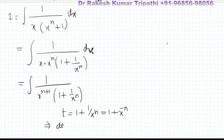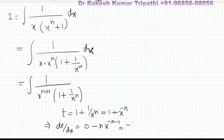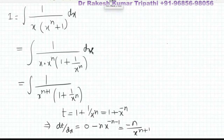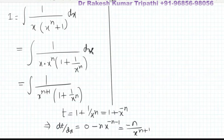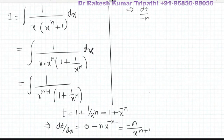So dt/dx: the derivative of 1 is zero, and the derivative of x to the power minus n is minus n·x to the power minus n minus one, which we can write as minus n upon x to the power n plus one. Transferring dx to the right-hand side gives dx/xⁿ⁺¹ = dt/(−n).